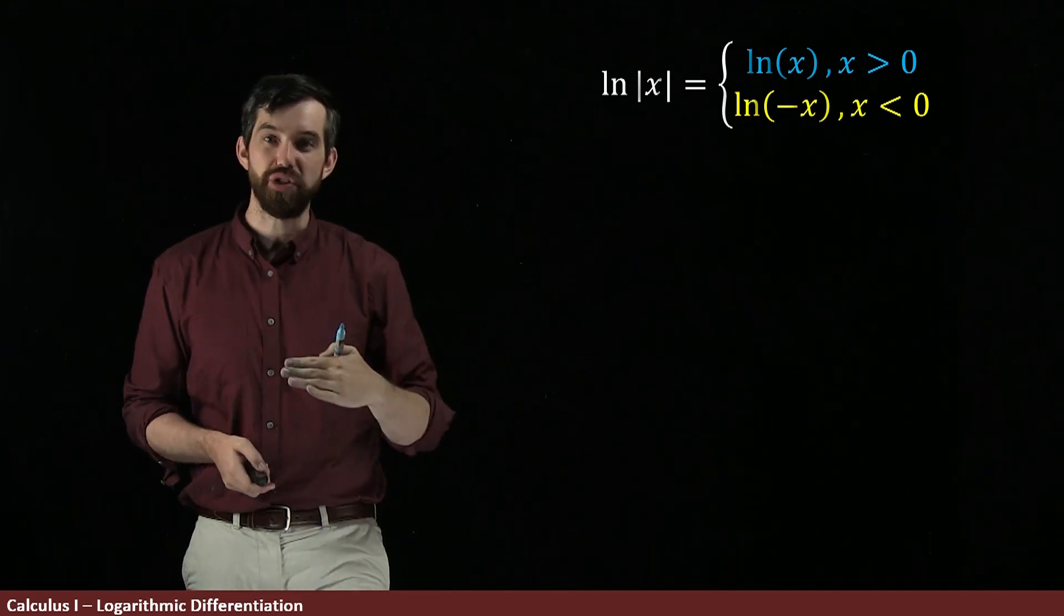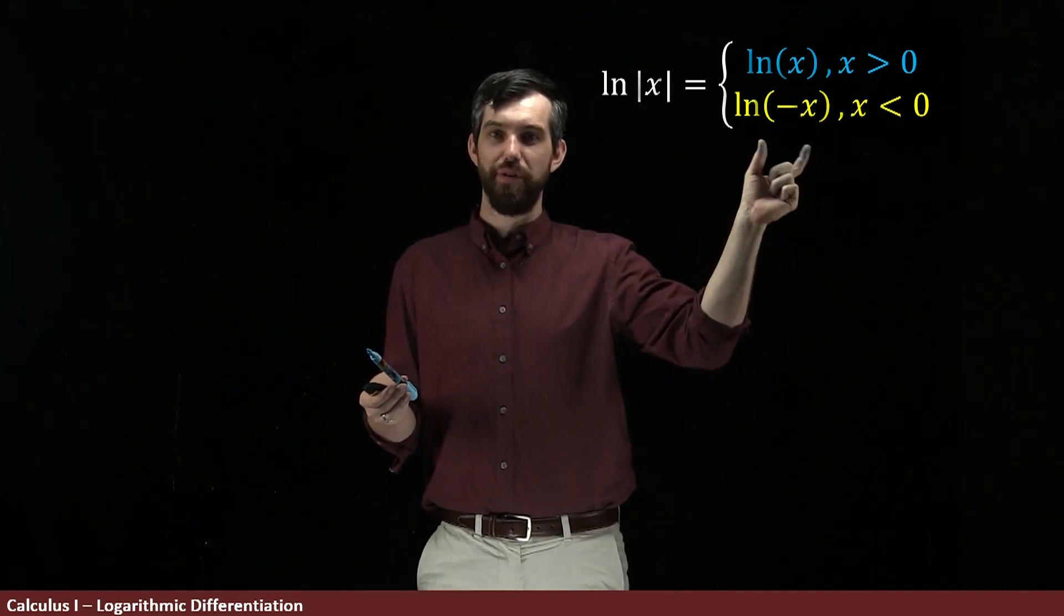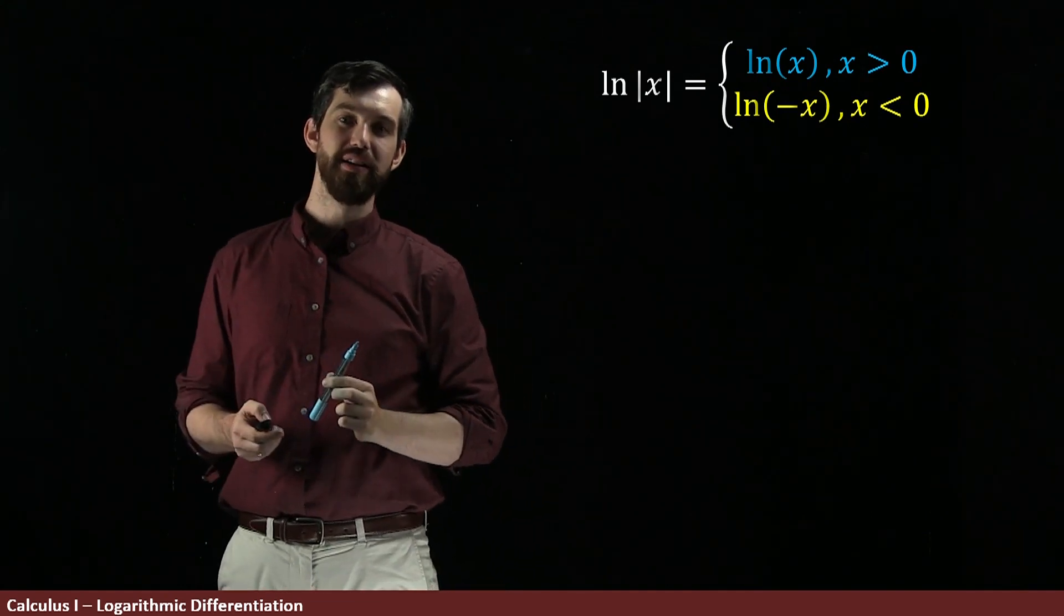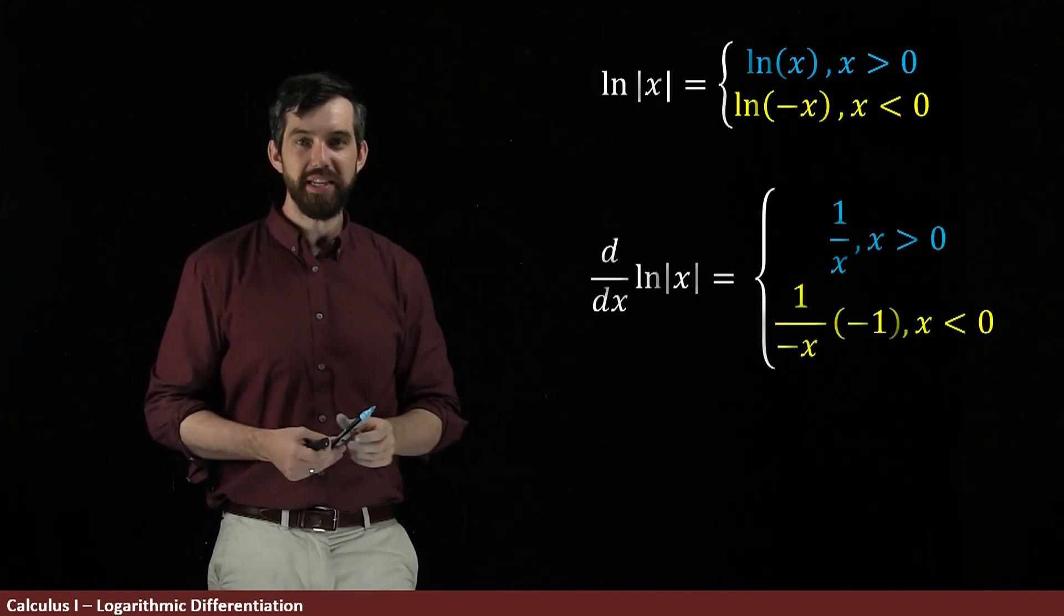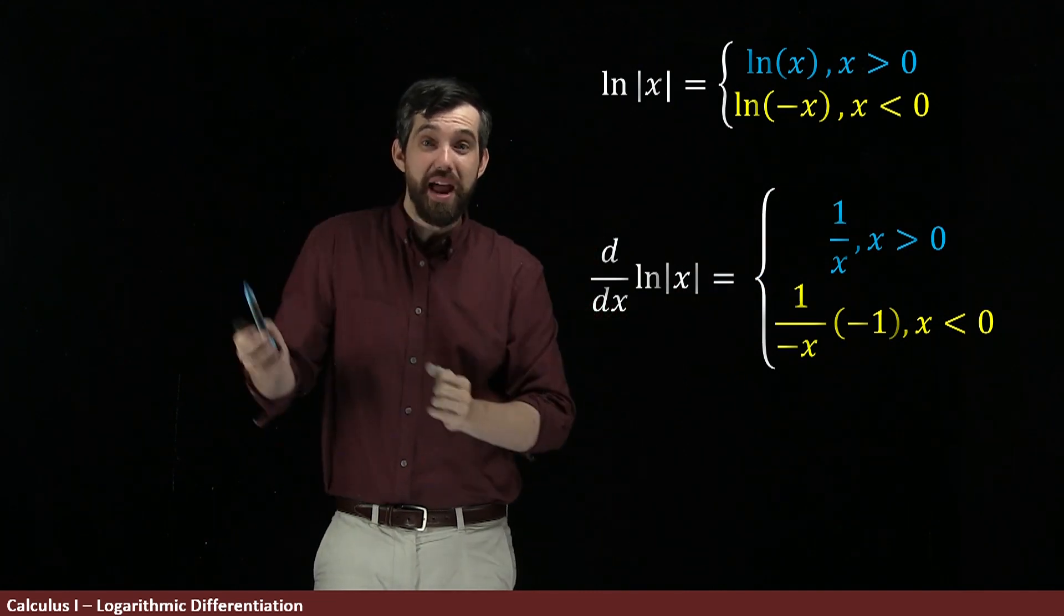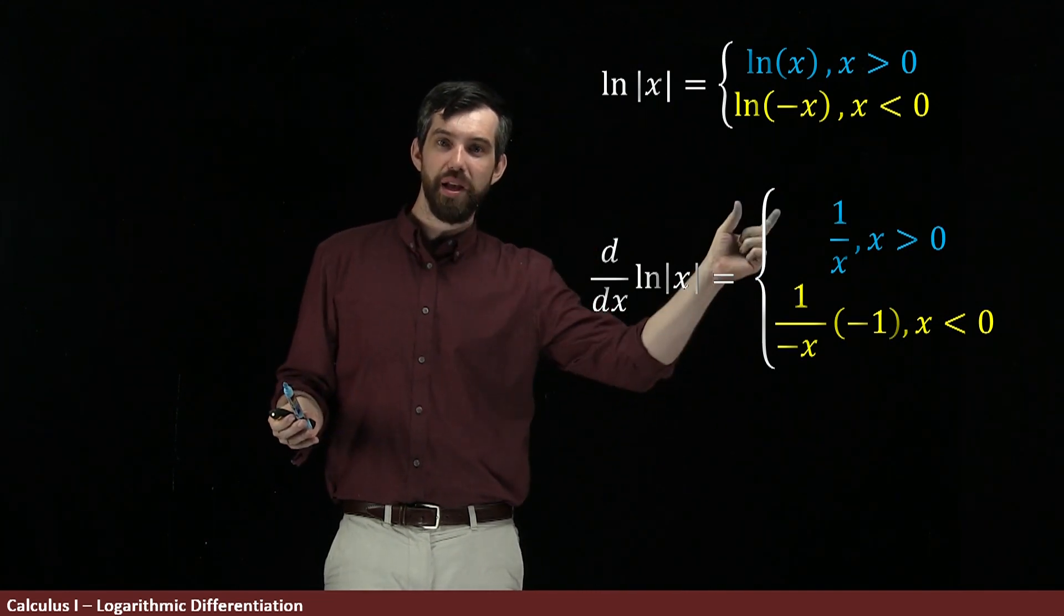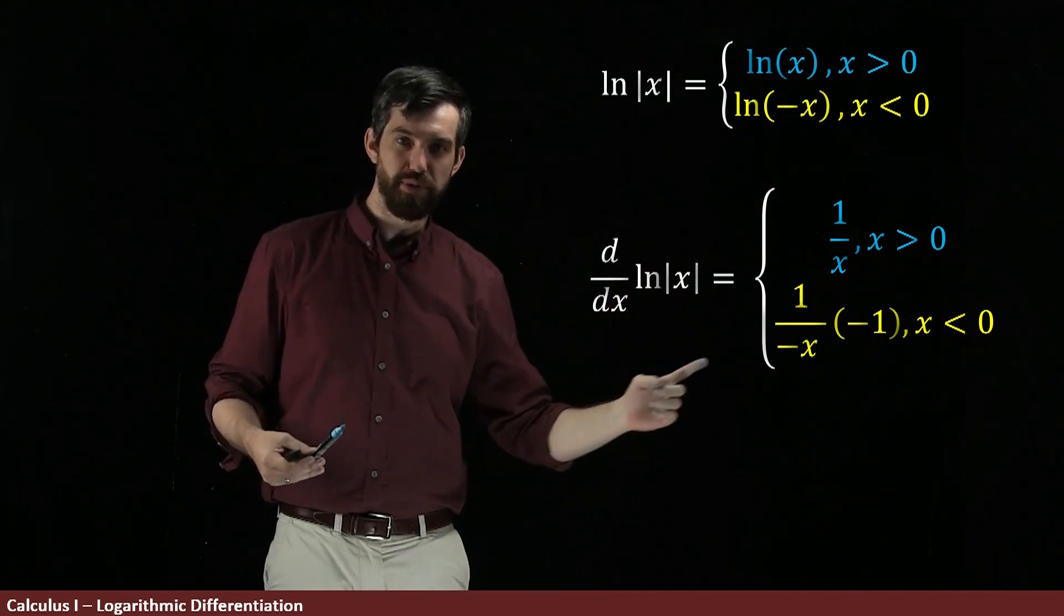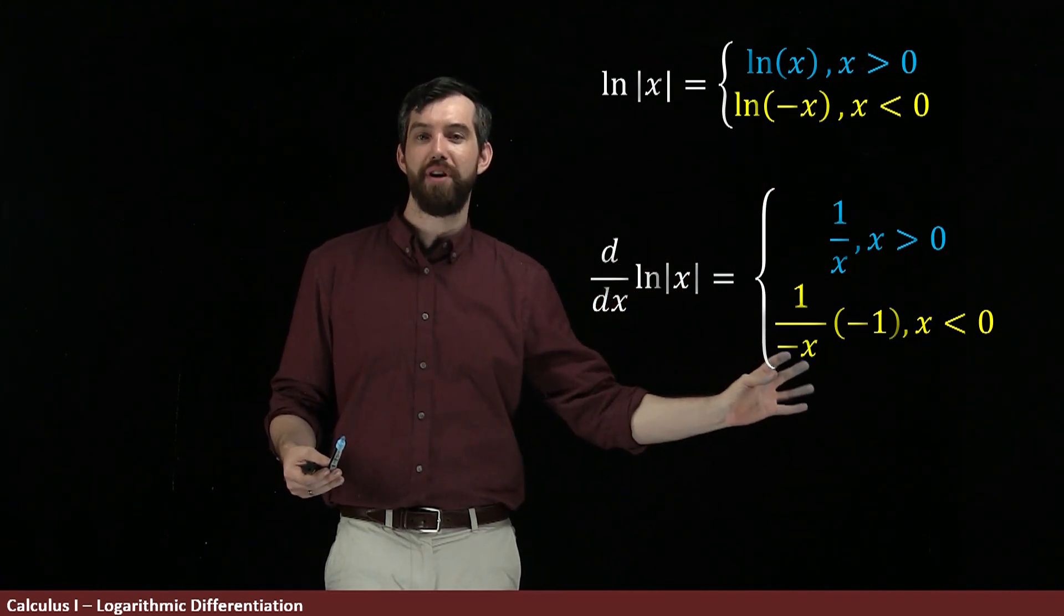But when x is less than 0, now what I'm trying to take is the derivative of the natural logarithm of minus x and I can do that by the chain rule. That is to say, the original one was 1 over x, I knew that, but down here it's the derivative of the outside, which is the natural logarithm, so it goes 1 over whatever I have on the inside,